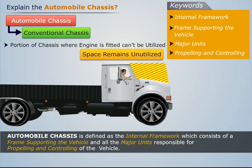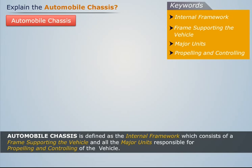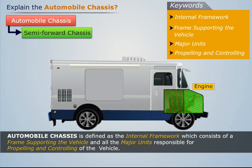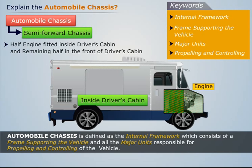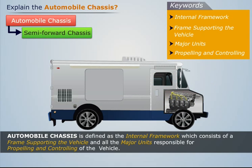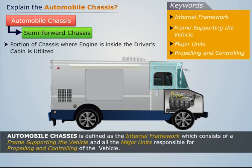Also in conventional chassis, the portion where the engine is fitted cannot be utilized for carrying passengers or goods. In semi-forward chassis, the engine is fitted in such a way that half of it is inside the driver's cabin and the remaining half is in front of the driver's cabin. Here, the portion of the chassis where the engine is inside the driver's cabin can be utilized for carrying passengers or goods.